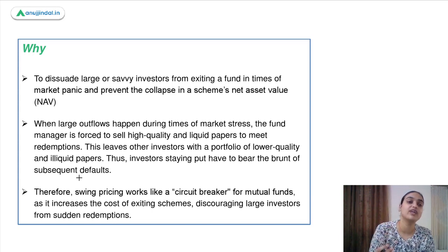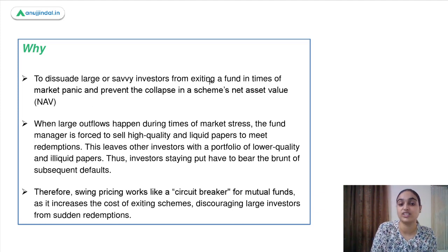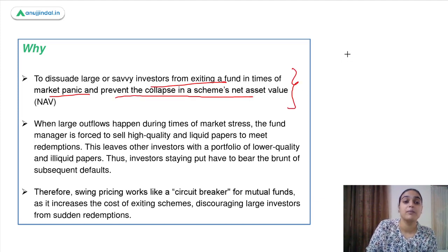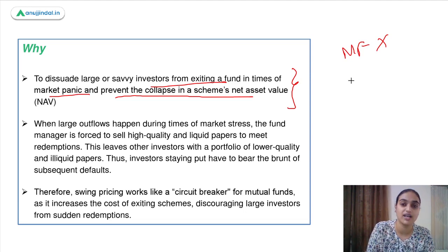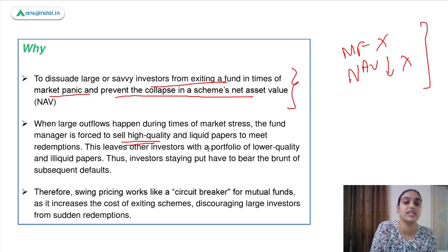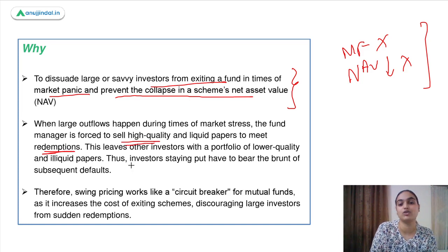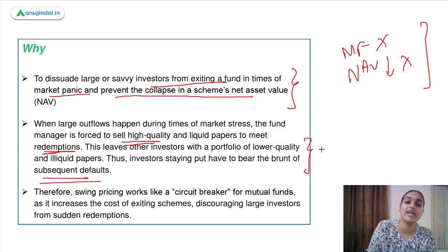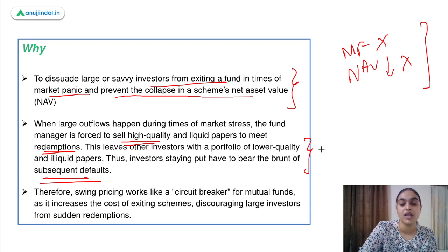SEBI wants to introduce this mechanism to protect investors who continue to remain invested for a longer period in the mutual fund. The basic objective is to dissuade large investors from exiting at times of market panic, thereby preventing the collapse in NAV. When large outflows happen, the fund manager is forced to sell good quality liquid papers to meet redemptions, and investors who continue to stay with the mutual fund have to bear the brunt of that.